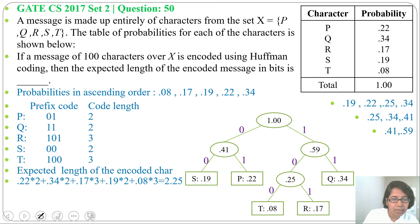So 0.22 times 2, 0.34 times 2, 0.17 times 3 for R, 0.19 times 2 for S, 0.08 times 3 for T. Total is 2.25. So that is the average bits required for each character.